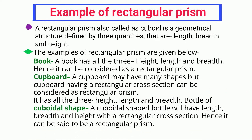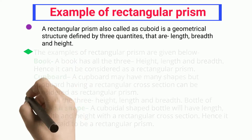Bottle of cuboidal shape: a cuboidal shaped bottle will have length, breadth, and height with a rectangular cross-section. Hence it can be said to be a rectangular prism.